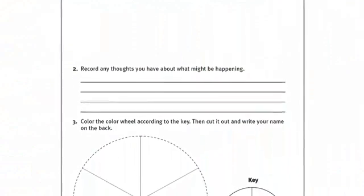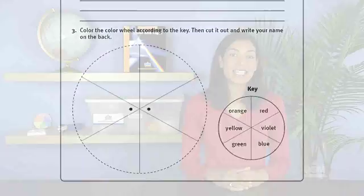To prepare for the activity, make a copy of Activity Sheet 1 for each student. This activity must be done on a relatively sunny day in an area exposed to direct sunlight.